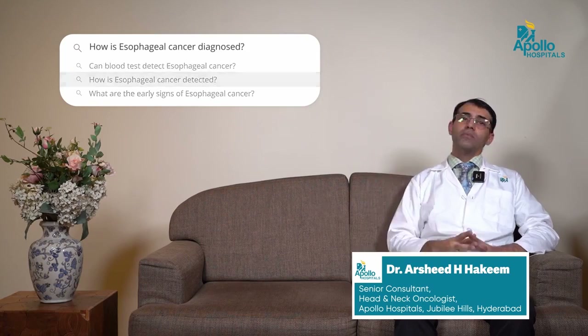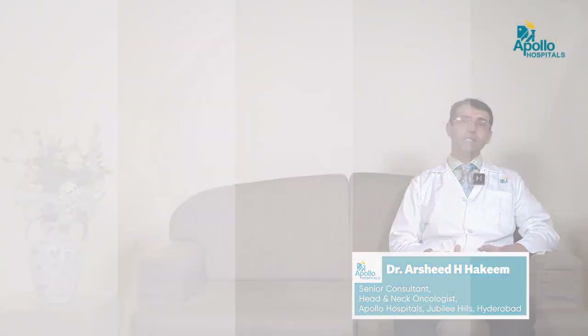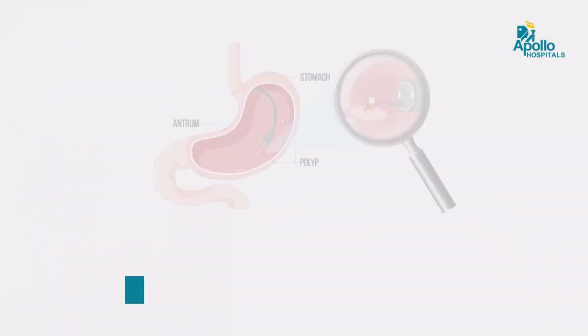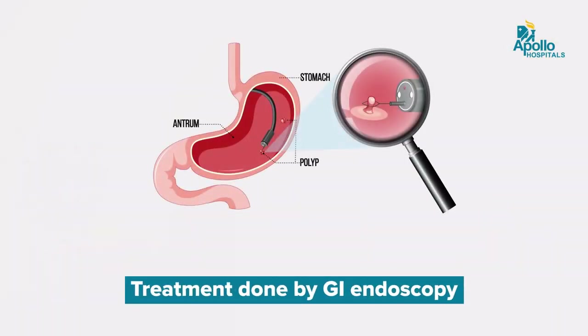How is esophageal cancer diagnosed? The most common way to diagnose esophageal cancer is by upper GI endoscopy. It can be done as an office-based procedure where an endoscope provides visualization of the full esophagus. A small piece of tissue can be taken from the growth and sent to a laboratory for a definitive diagnosis.